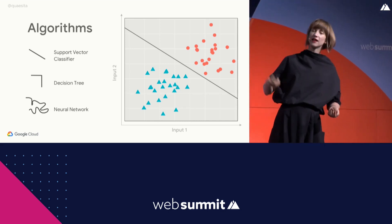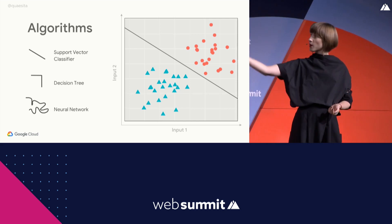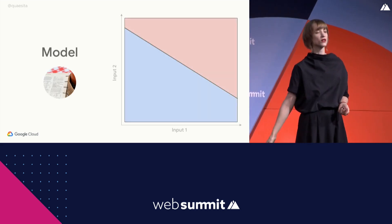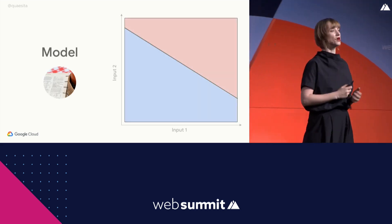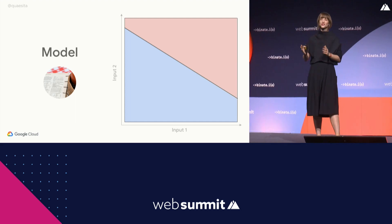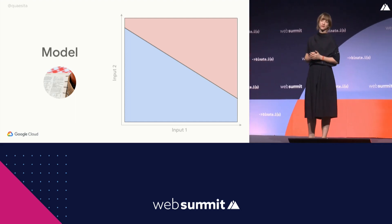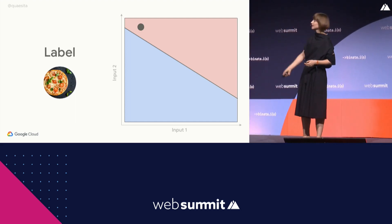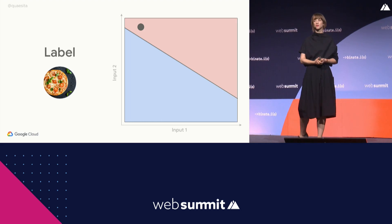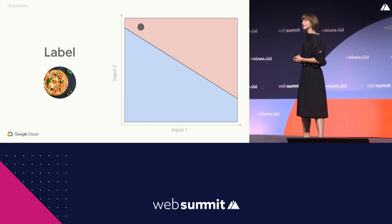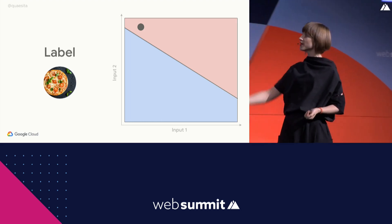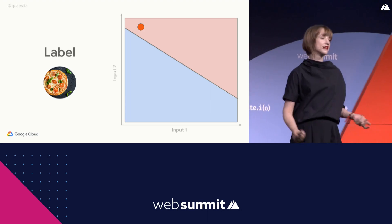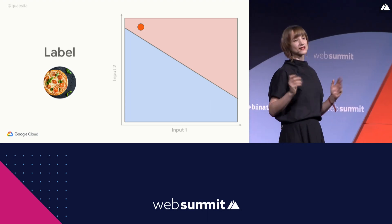And when that algorithm is finished, what comes out is what you've wanted all along — a model. Now what's a model? That is just a recipe. A recipe for taking in a new data point and figuring out what to label it with. So red or blue? Red. See, it's easy.